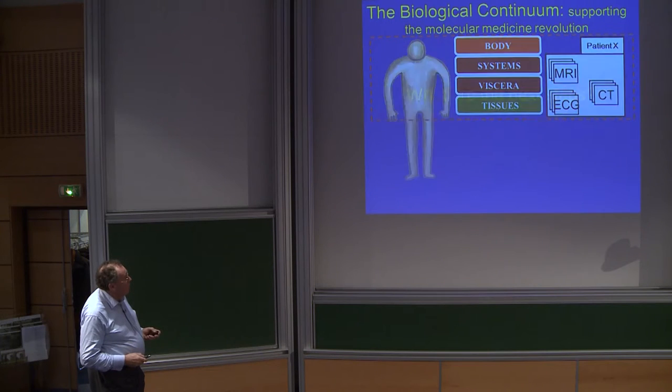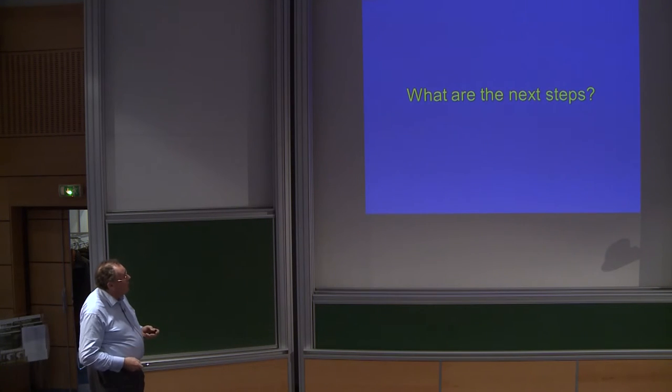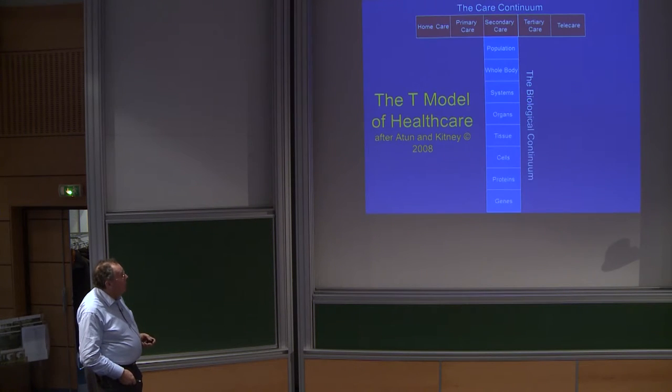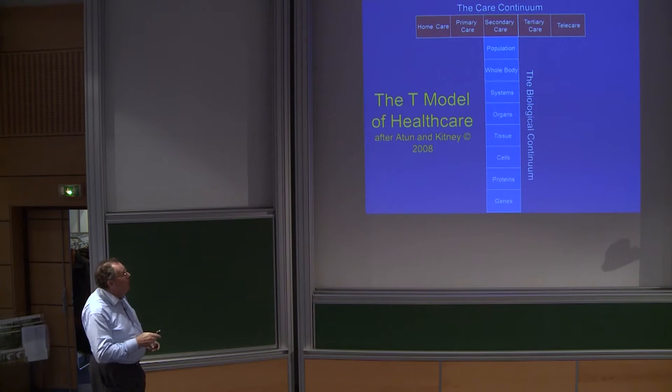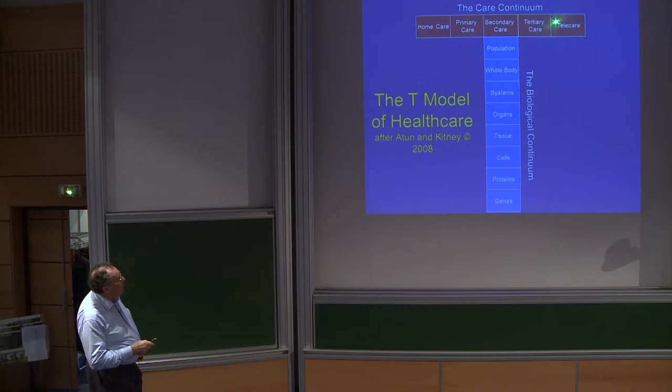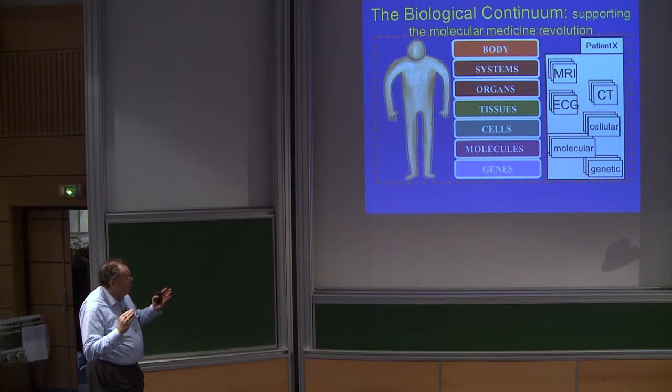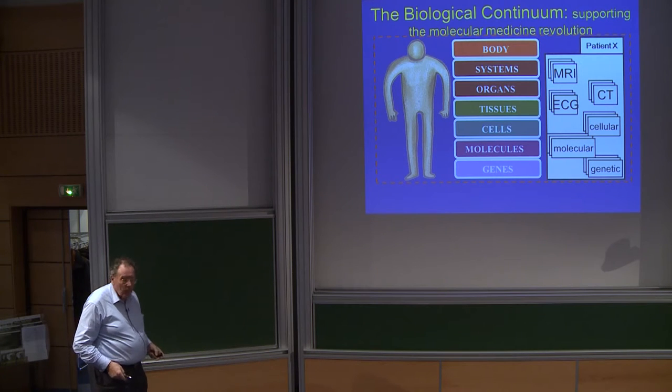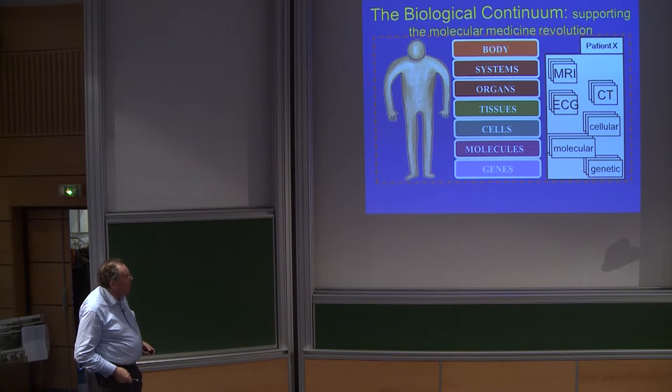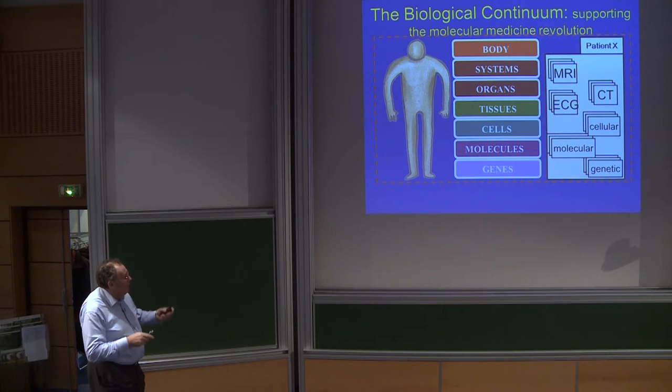When I think about all this data and information coming in, traditionally one thinks about the upper levels of what I call the biological continuum: systems, viscera and tissues. But in terms of next steps, we have to think about the lower levels of the biological continuum, cell protein and gene level, but also how this relates to what we called in this paper in 2008 the care continuum. So not only primary, secondary and tertiary care, but also telecare and home care. From a healthcare point of view, we're beginning to see much more development into these areas in terms of integration.